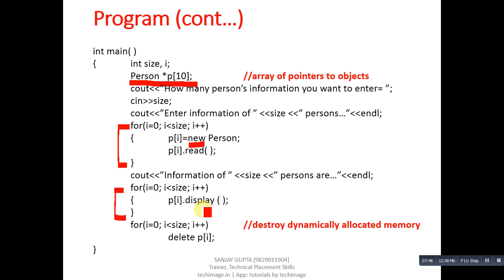With the second loop, the display function is called and repeats size times, so all information entered by the user is printed on console. To destroy the dynamically allocated memory, another for loop uses `delete P[i]` to delete all memory allocated by the new operator. So when we want static objects, we use array of objects; when we want runtime memory allocation or want to save unused memory, we use array of pointers to objects and deallocate with the delete operator.